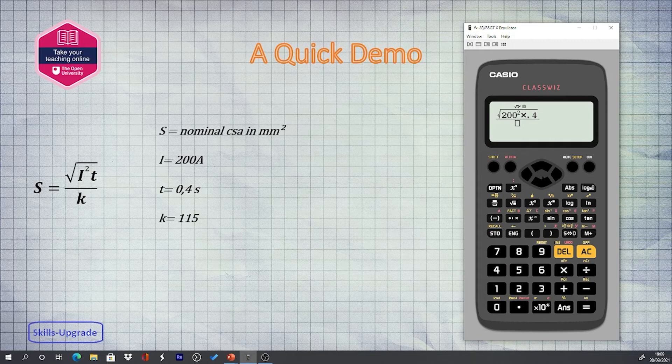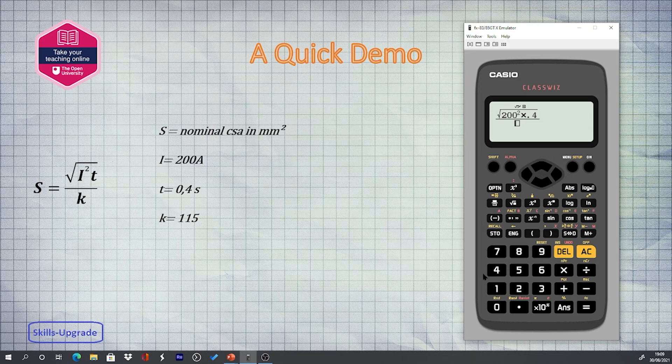Using the cursor function we then move to the bottom line and enter the k-factor value.